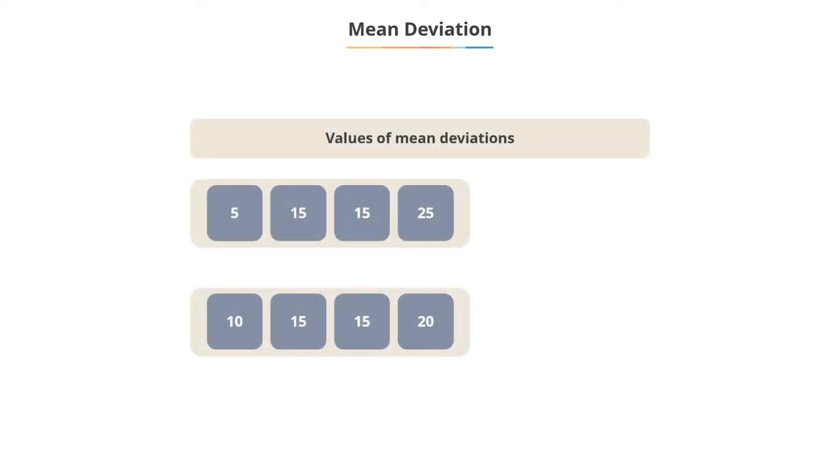For the two data sets shown, the values of the mean deviation are 5 and 2.5.